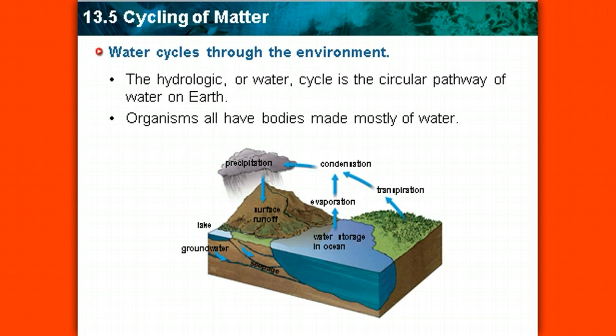Organisms all have bodies made mostly of water. When we look at the diagram, we can see that water can cycle using some common processes that we're already familiar with. Water that's in the ocean or in a lake evaporates into the atmosphere. It then condenses, forms a cloud over land, and rains.